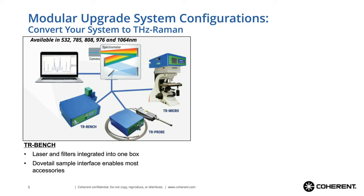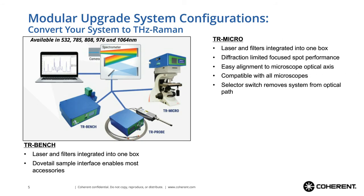The TR Bench integrates everything into a single box with a versatile dovetail flange for easy connect and disconnect to various sample interface accessories. The TR Micro adds more internal optics to align the beam to the optical axis of any standard microscope. All Raman signals are returned to the system, but shorter wavelengths are transmitted through to a CCD camera or eyepiece placed above the system. An integrated selector switch allows the optics to be removed from the beam path without interfering with any other instruments on the microscope.